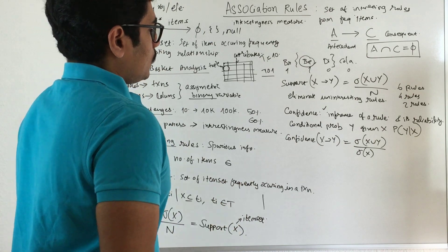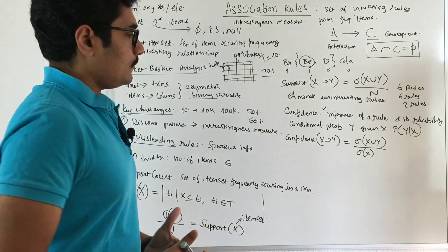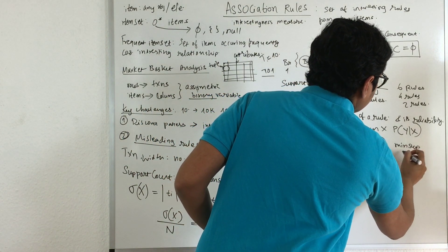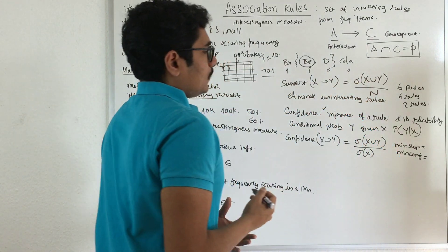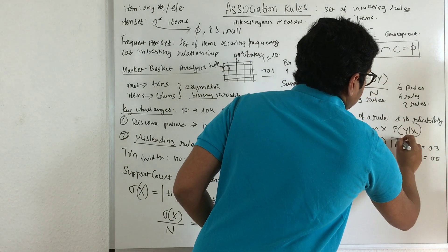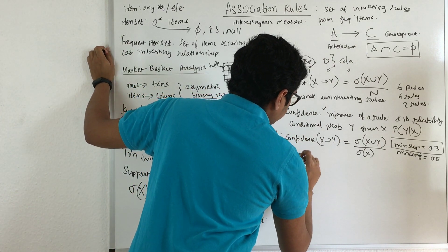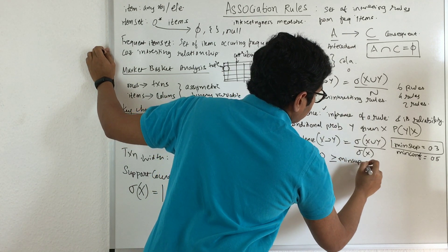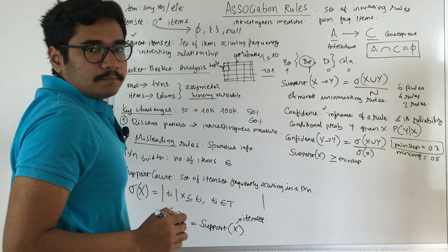Now, how do you derive a frequent item set? In a particular transaction, you have a parameter called min support or min confidence, given by the mining algorithm — for example, 0.3 or 0.5. If the support of a particular item set is greater than or equal to the min support threshold already defined, then you call it a frequent item set.